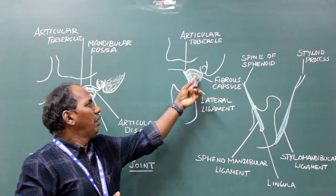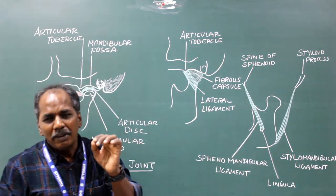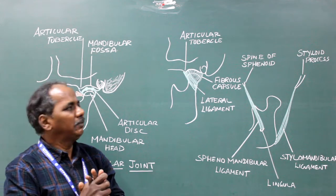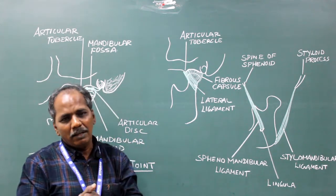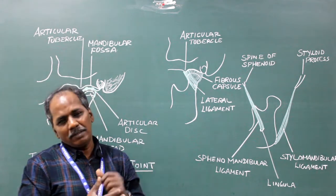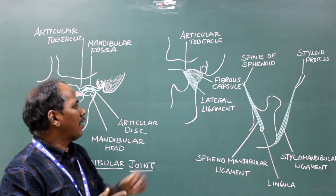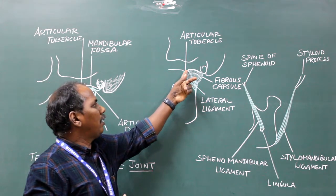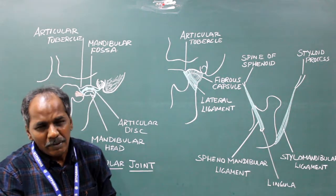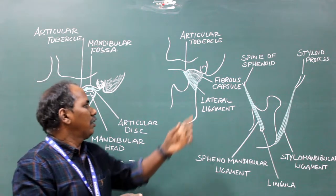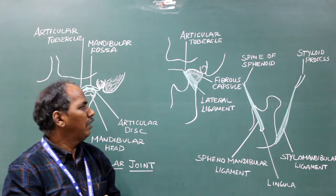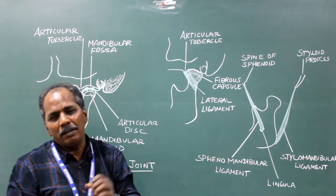Capsule. It is a loose fibrous sac which encloses the joint cavity. Its inner surface is lined by synovial membrane. Attachments: proximally, it is attached to the articular tubercle and the margins of the articular fossa and squamotympanic fissure; distally, it is attached to the neck of the mandible.